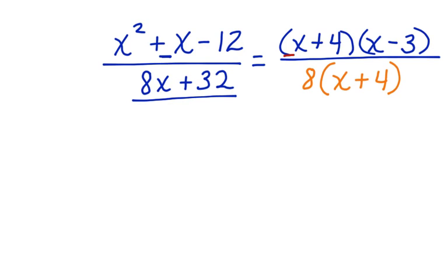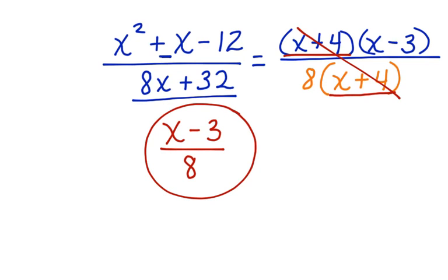Here it is again. We have a binomial common in the numerator and the denominator. We simplify those and we're left with x minus 3 over 8. This is our final answer and our work is complete.